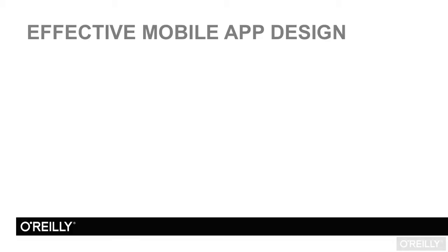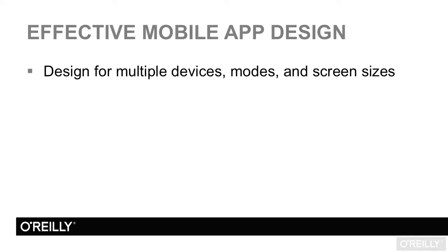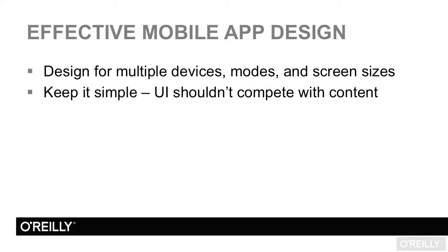Effective mobile app design relies on three basic principles: designing for multiple devices, modes, and screen sizes; keeping things simple — your user interface should not compete with the functionality or the content of your app; and user-centered design.